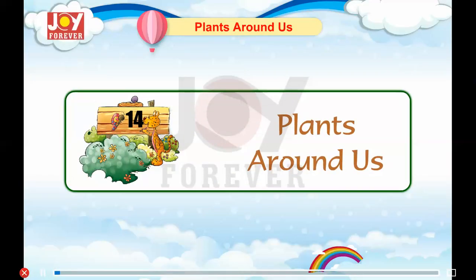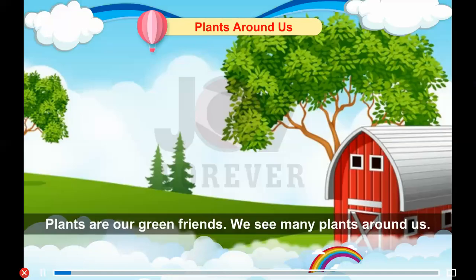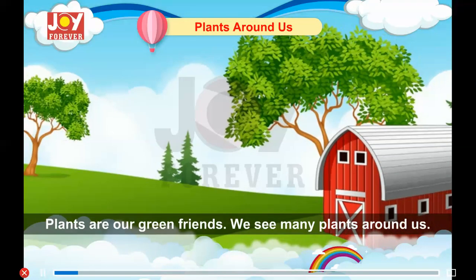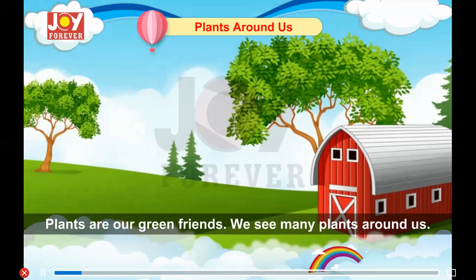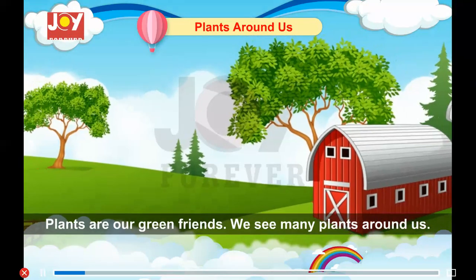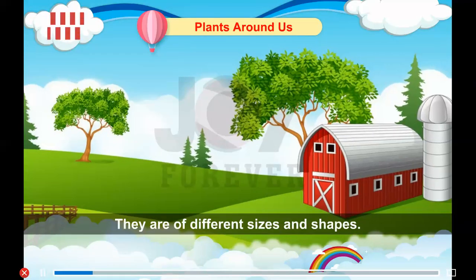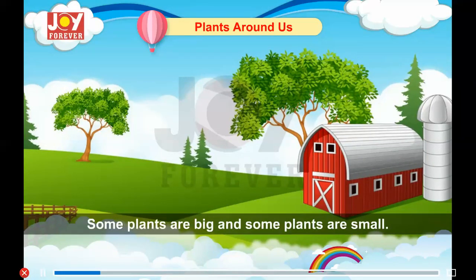Chapter 14: Plants Around Us. Plants are our green friends. We see many plants around us. They are of different sizes and shapes. Some plants are big and some plants are small.